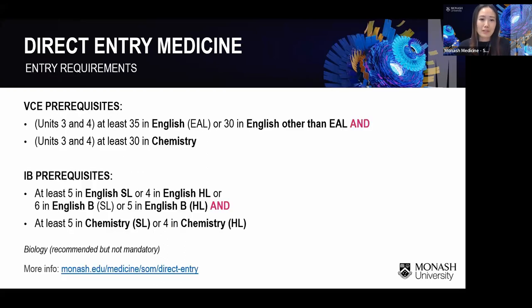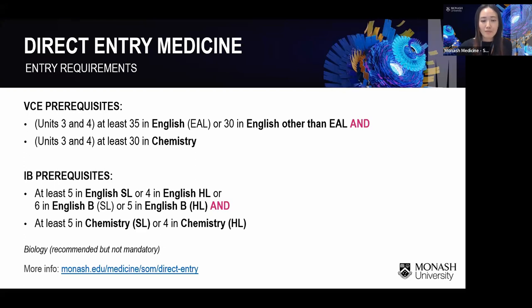For subject requirements: if you're doing VCE, you need at least a study score of 35 in English EAL, or 30 in English other than EAL, and at least 30 in chemistry. If doing IB, you need at least 5 in English standard level or 4 in English higher level, and a score of 5 in chemistry standard level or 4 in chemistry higher level. Biology is highly recommended but not mandatory.